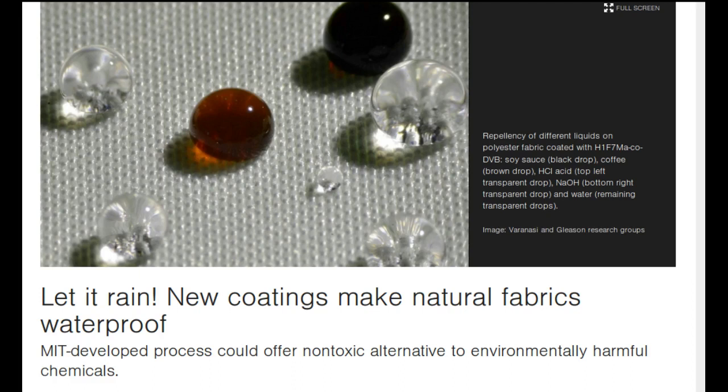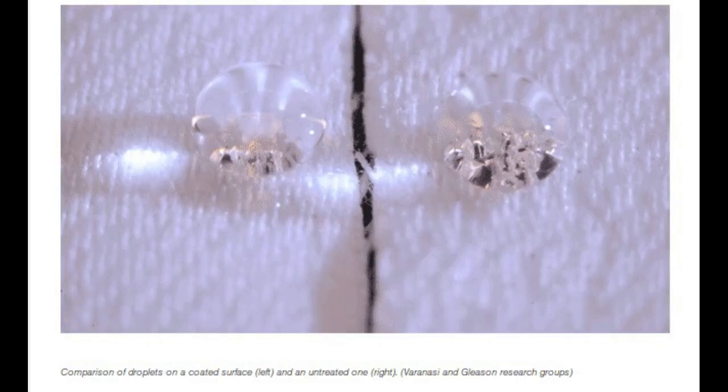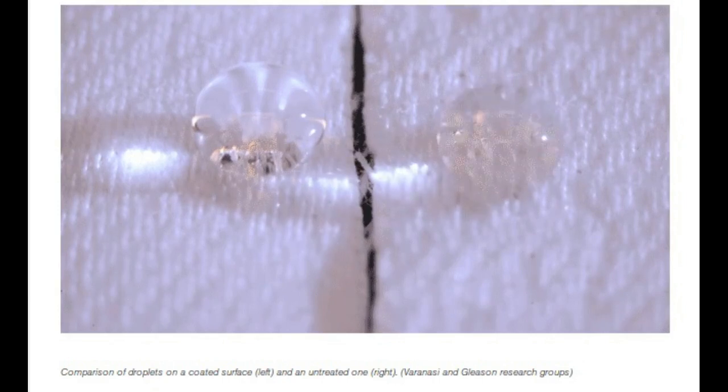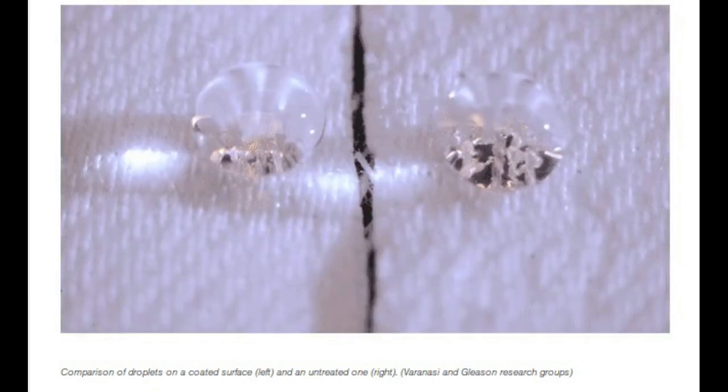Because of the way they accumulate in the environment and in body tissue, the EPA is in the process of revising regulations on the long-chain polymers that have been the industry standard for decades. The coatings currently used to make fabrics water-repellent generally consist of long polymers with perfluorinated side chains.